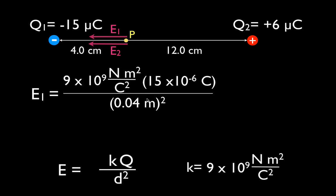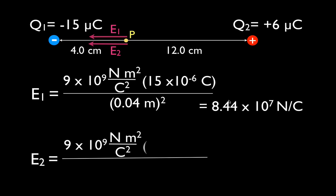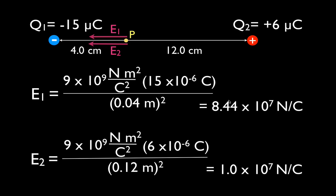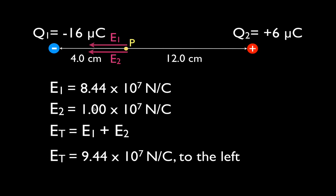We're going to square the number and get our answer. The meters squared cancels with the meters squared in the numerator, one coulomb cancels, and that's good because the units for electric field are newtons per coulomb. Doing this math gives 8.44×10⁷ N/C. So at point P, the electric field from Q1 points to the left with a magnitude of 8.44×10⁷ N/C. For E2, using the same equation with 6 microcoulombs and a distance of 12 centimeters, we get 1.0×10⁷ N/C. The total electric field — since both point in the same direction — is 9.44×10⁷ N/C to the left.